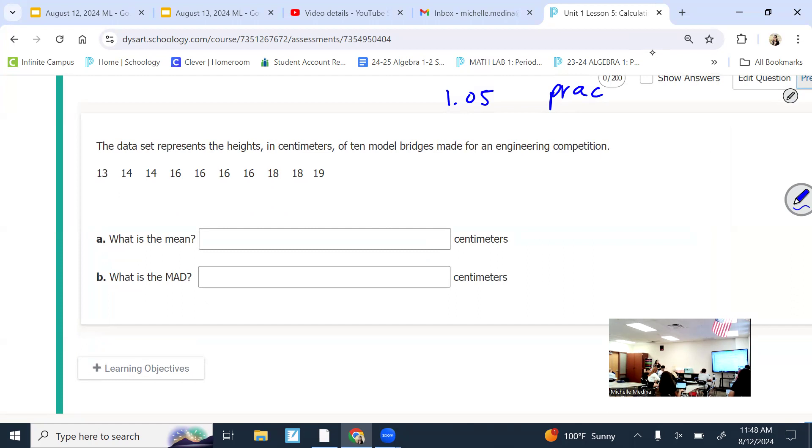So, MAD stands for Mean Absolute Deviation. Let's break down that word. Mean Absolute Deviation. First you need to know what the mean is and how to find it.